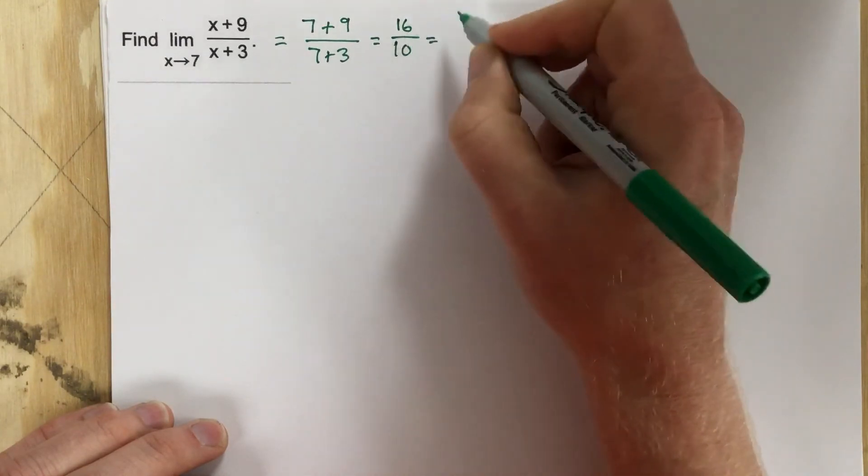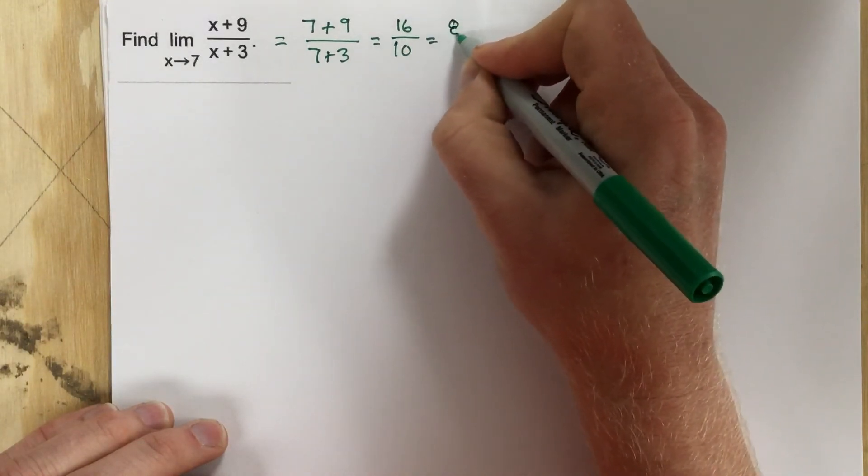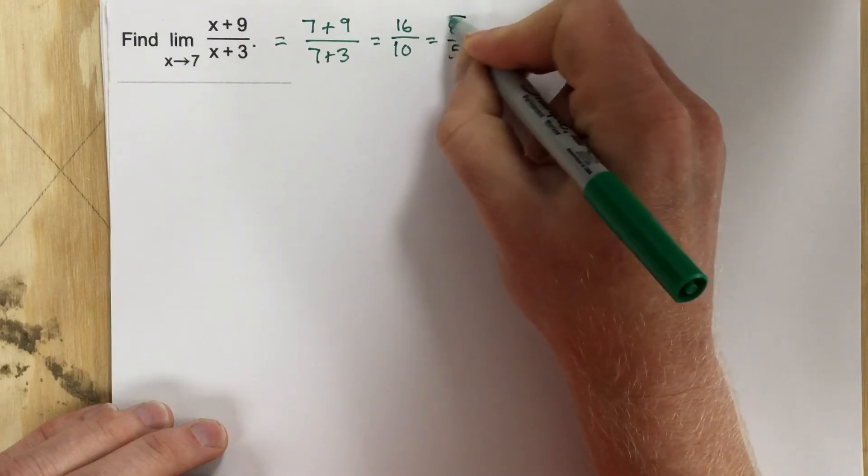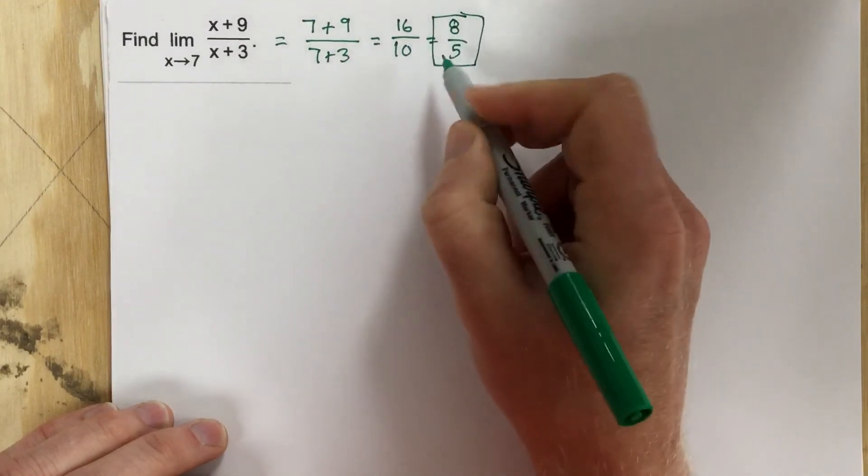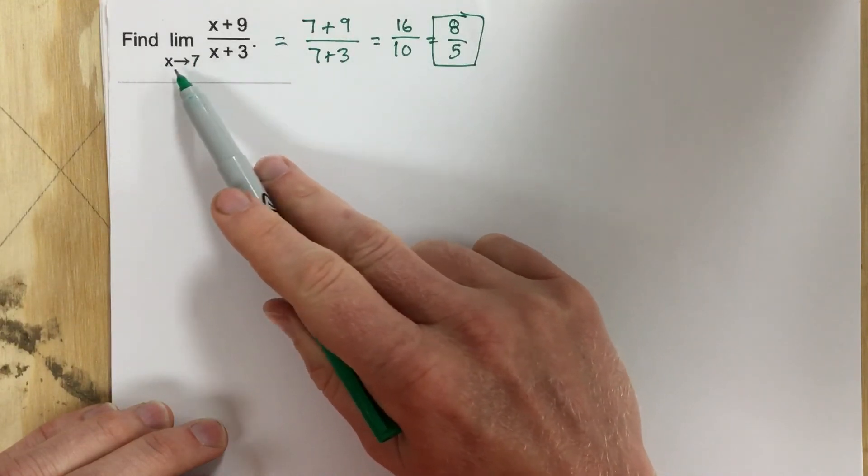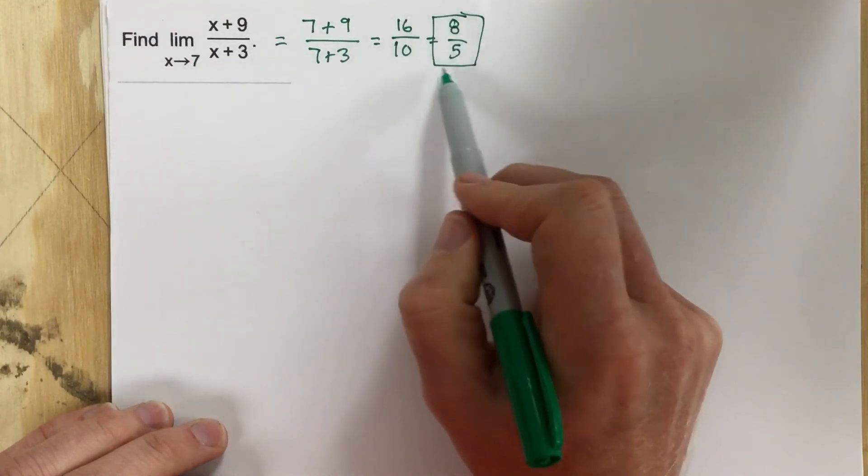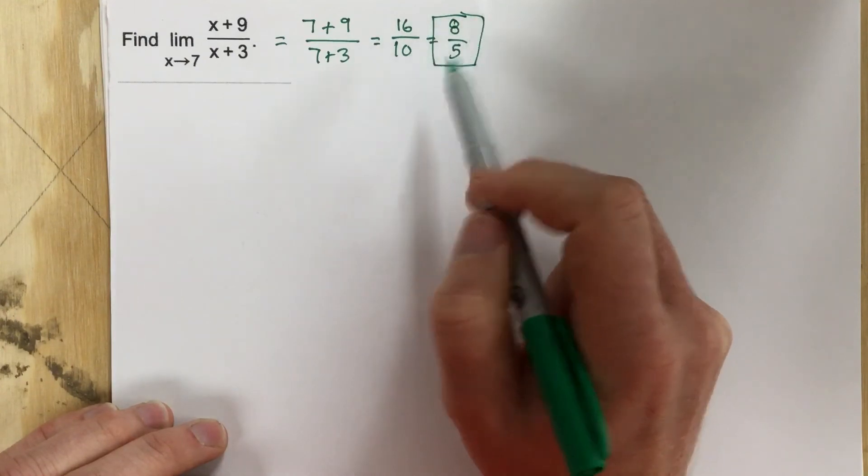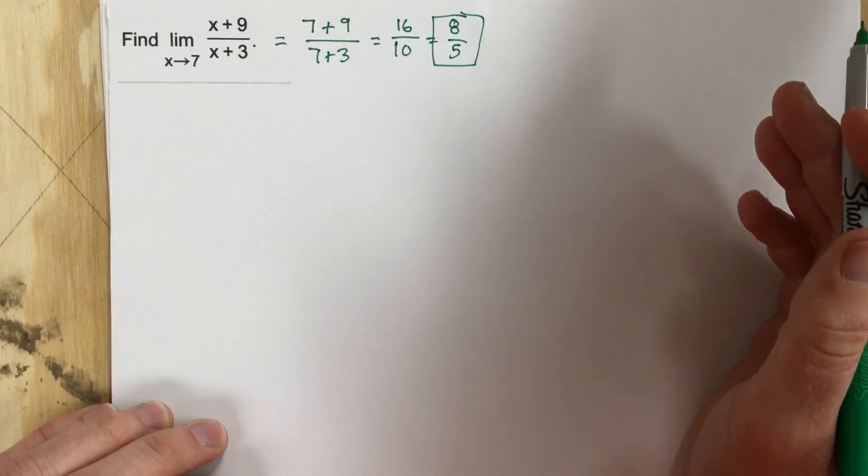So you'll notice this function's actually defined at an x value of 7. Because it's defined at an x value of 7, that is the limit: 8 over 5. So we don't have to do anything special with this function.